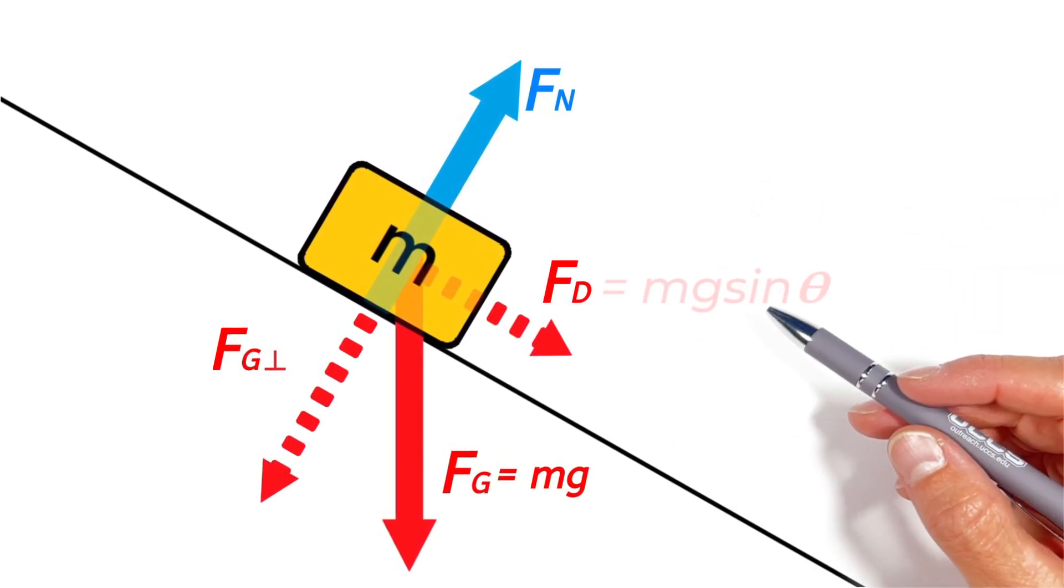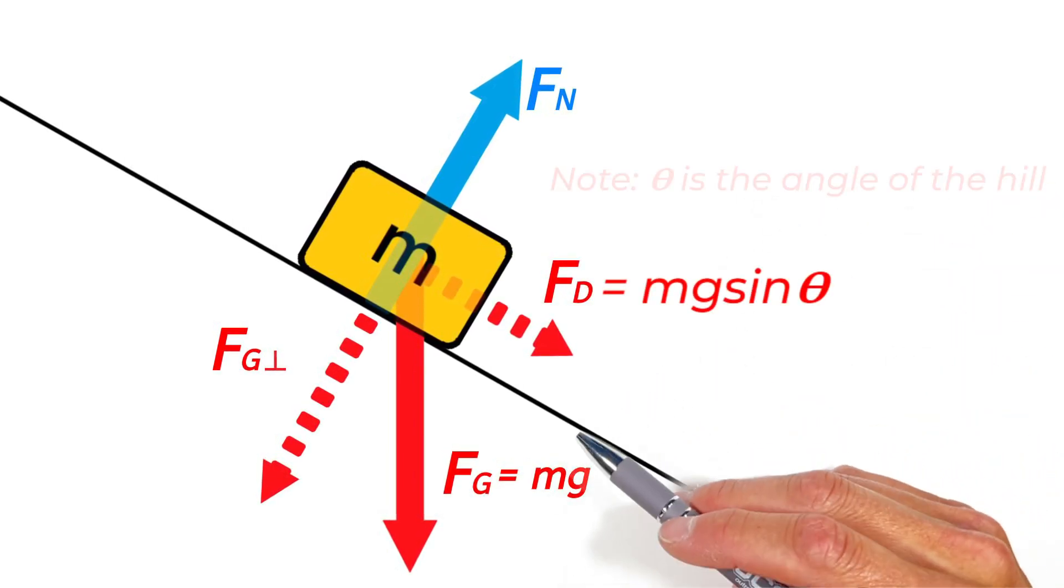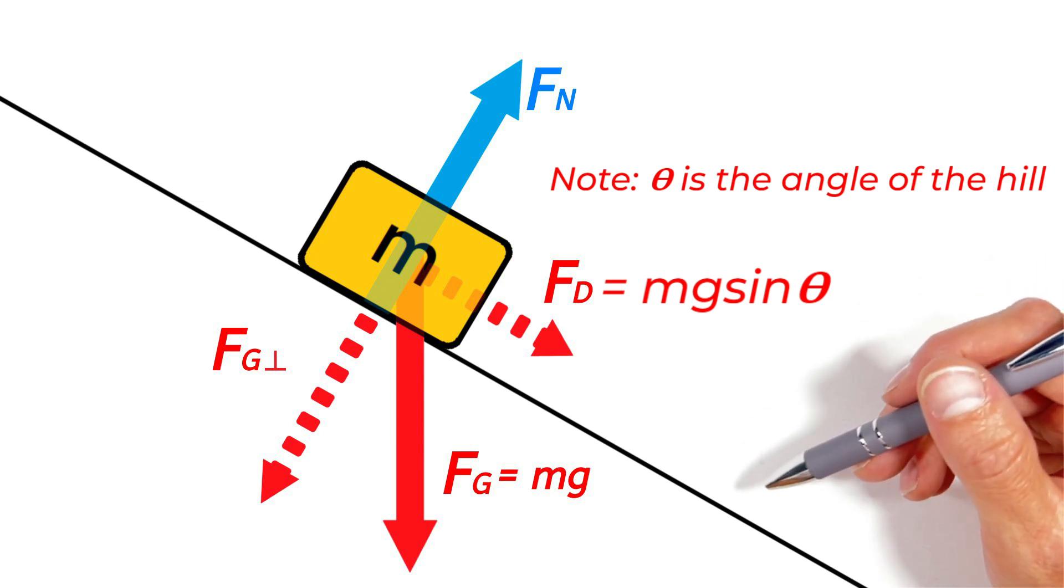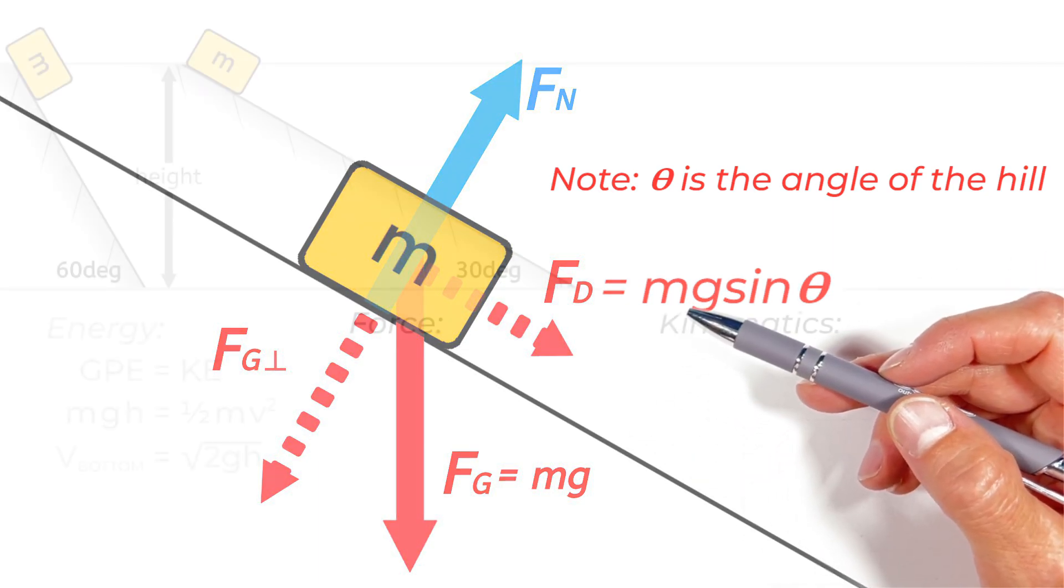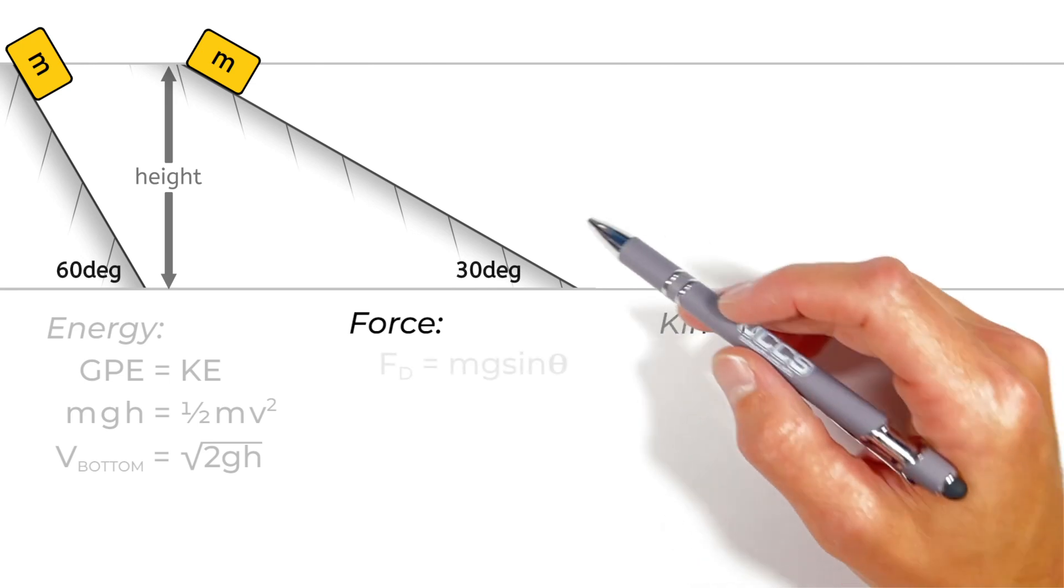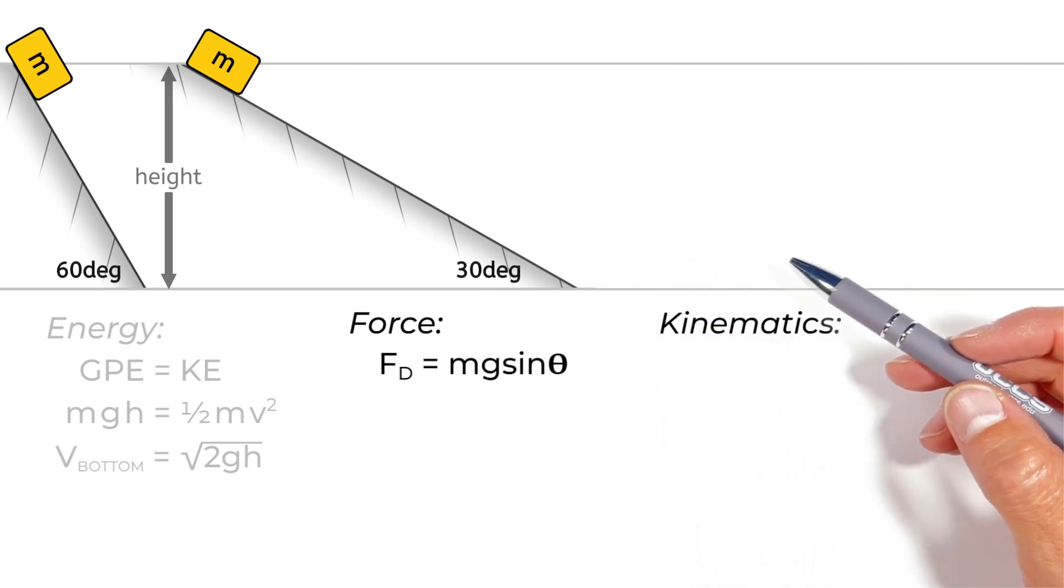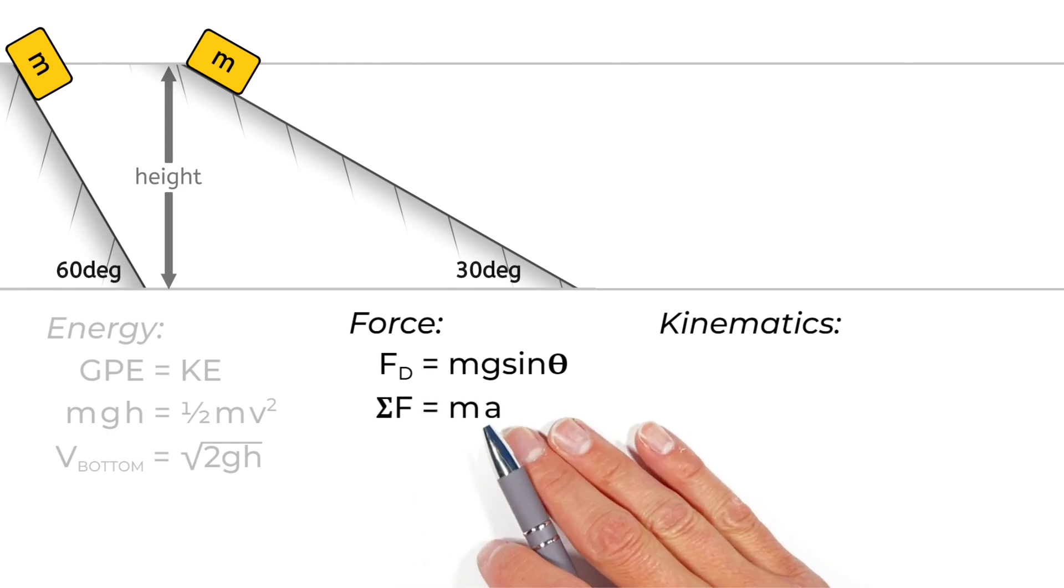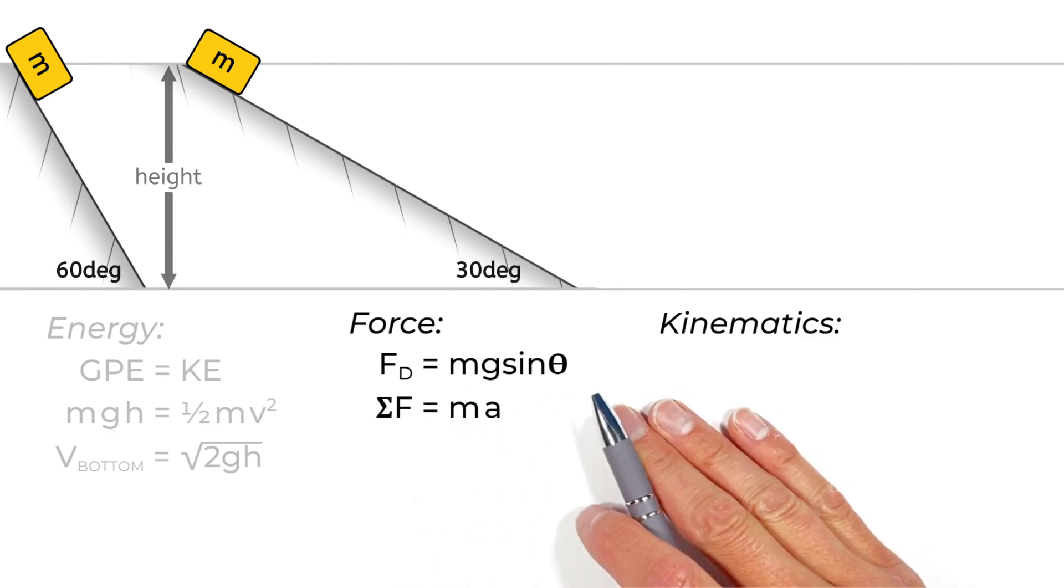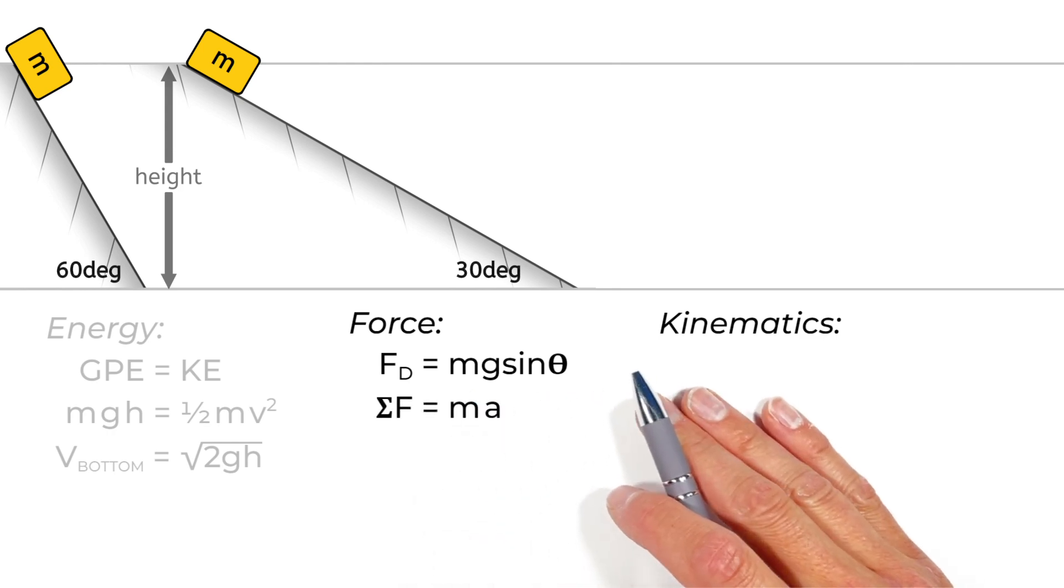Now, that force down the hill is given by the equation mg sine theta. And again, I'll link down in the description a video taking a deep dive into exactly where that equation comes from. But it's that force down the hill which causes the block to accelerate. And so looking at Newton's second law, we can say the force down the hill is going to cause the mass of the block to go through some acceleration a.